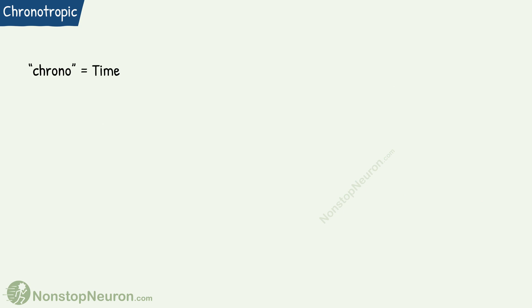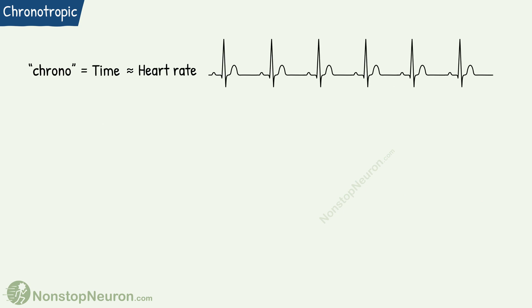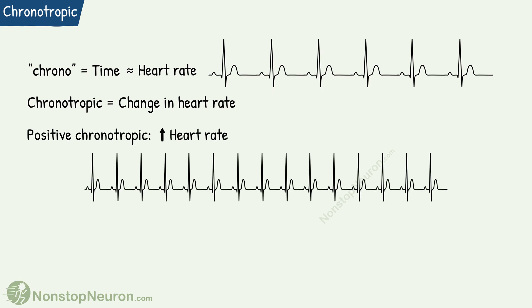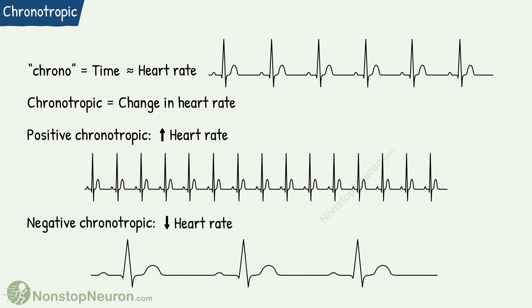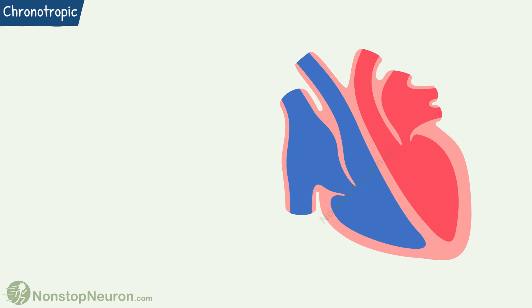First, chronotropic effects. Chrono means time, and the most important cardiac parameter related to time is heart rate — that is, how many times the heart beats every minute. So chronotropic means changes in heart rate. Positive chronotropic means an increase in heart rate, and negative chronotropic means a decrease in heart rate. Now we know that heart rate is controlled by the SA node, the pacemaker of the heart. So the factors affecting heart rate act through the SA node.